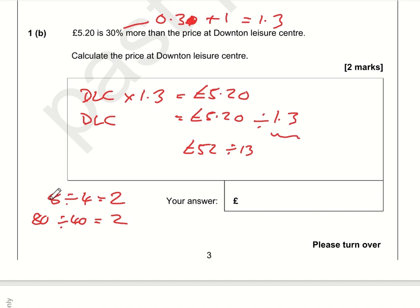So 5.20 divided by 1.3 is the same as 52 divided by 13. The thirteen times table goes 13, 26, 39, 52—so one, two, three, four. So 52 divided by 13 is 4. The Downton Leisure Centre price was £4.